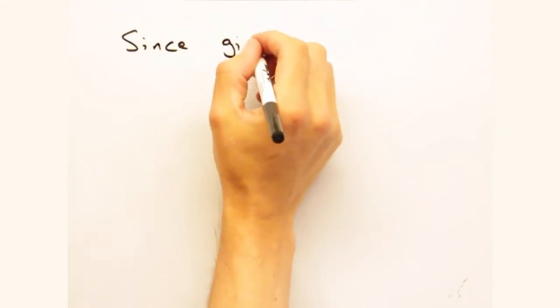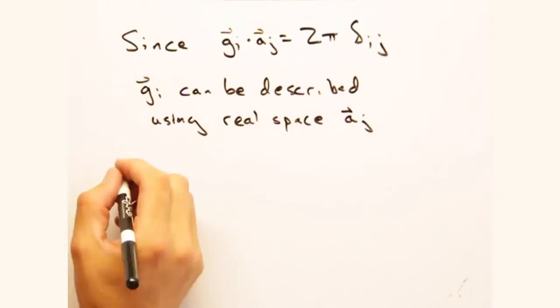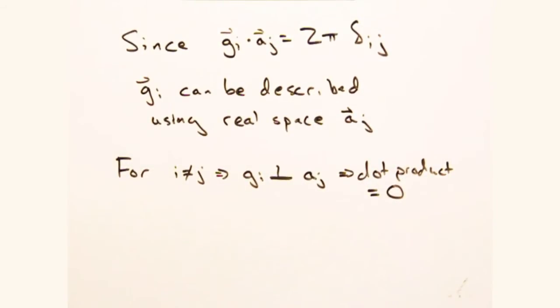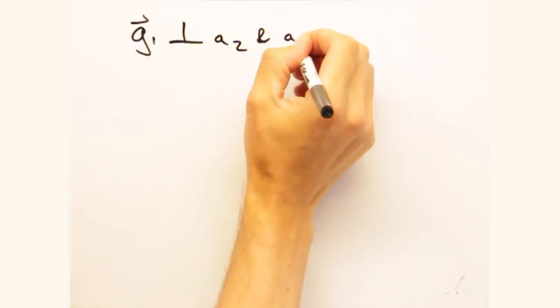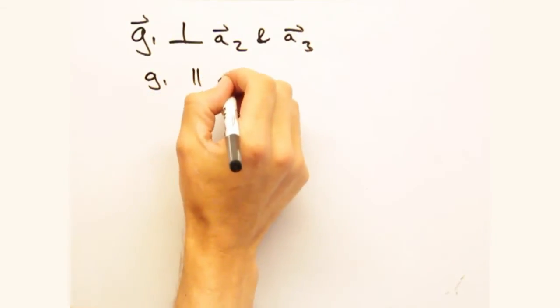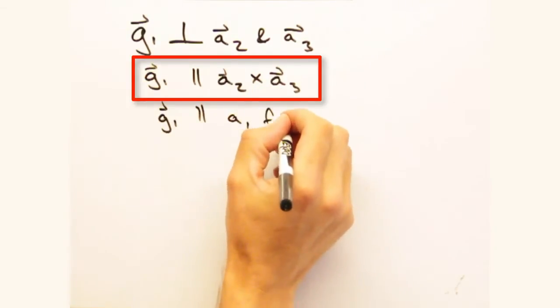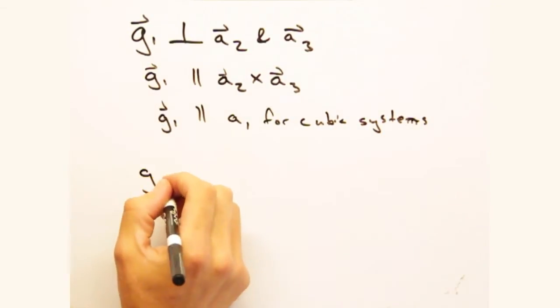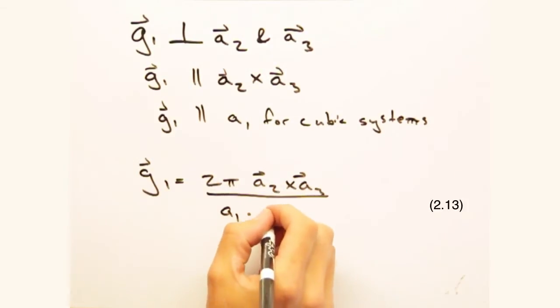And with that g dot a constraint, we can determine our g vectors in terms of our real space lattice vectors. Because g sub i dot a sub j is always zero, we know that g1 is perpendicular to a2 and to a3, and so should point in the direction of a1. Not quite. That's only true for cubic systems. More generally, we should think of g1 pointing in the direction of a2 cross a3, which may or may not be parallel to a1. Combining this with a scaling factor of two pi over the volume of our cell, and we get the following expression for g1.